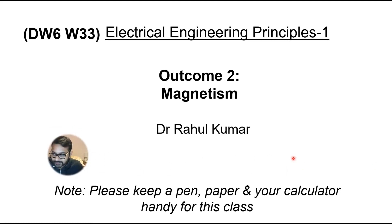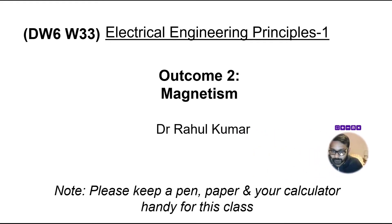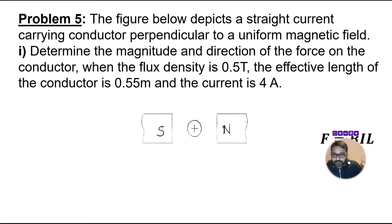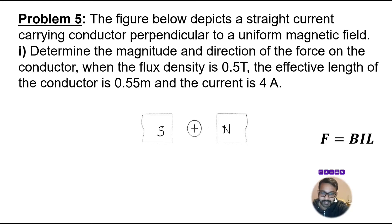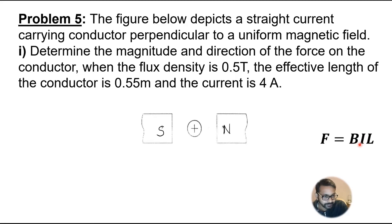Hello everyone. This is the second lecture on the second outcome, which is magnetism. In the previous lecture we studied about the force on a current-carrying conductor. The force is given by the equation F = BIL, where B is magnetic flux density, I is current, and L is the length of the conductor. The direction of the force is given by Fleming's left-hand rule.